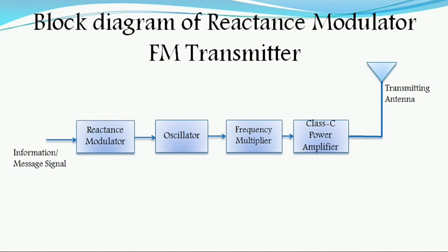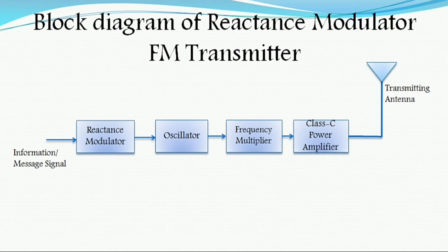Thereafter, the signal is passed through the class C power amplifier. Class C amplifiers are used for FM transmitters because any small amplitude variations present in the FM signal are removed by limiters or limiting amplifiers at the receiver side. This is the complete procedure for generating the FM signal in the direct FM transmitter using the reactance modulator.